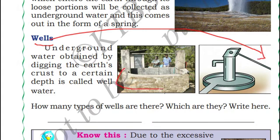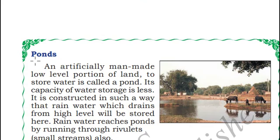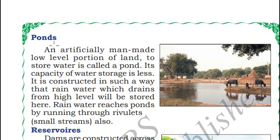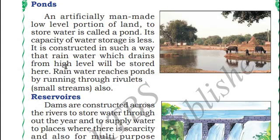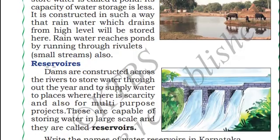One more source of freshwater is ponds. Generally, ponds are artificially built to store water. The water capacity in ponds is comparatively less compared to rivers. Ponds will be filled by rainwater. Next is reservoirs — dams will be constructed across the rivers to store water.